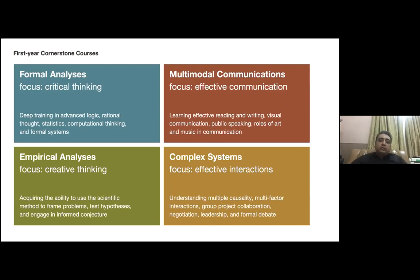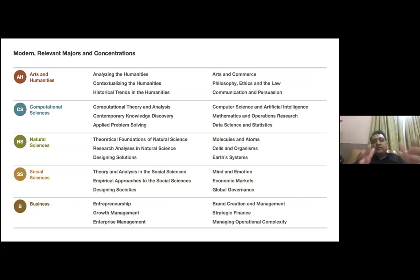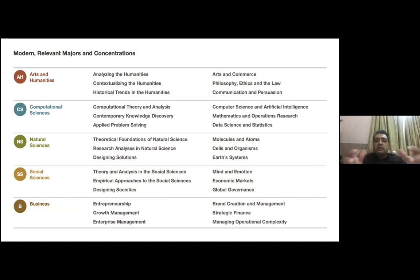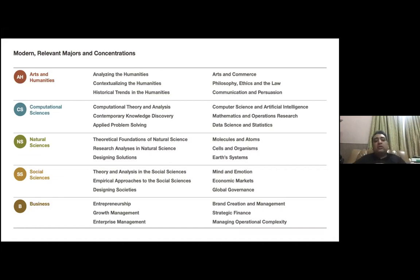After the first year, you get to pick your major. At Minerva we offer: arts and humanities, computational sciences, natural sciences, social sciences, and business. Generally, liberal arts colleges don't offer engineering programs — mostly you'd get a Bachelor of Arts or Bachelor of Science. In computational and natural sciences you get a Bachelor of Science; in arts and humanities and others, a Bachelor of Arts.